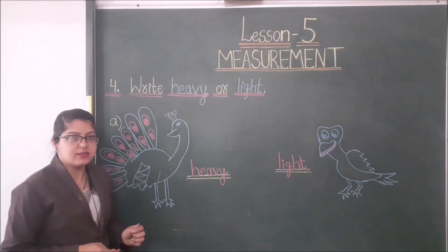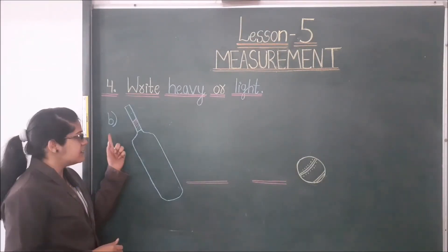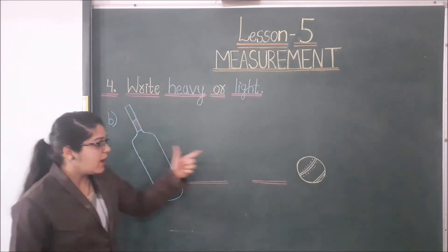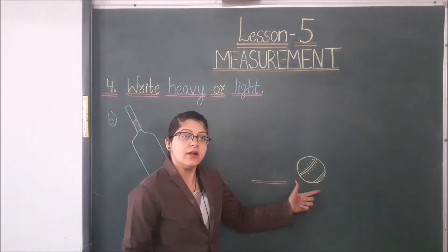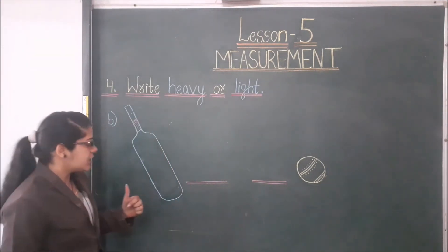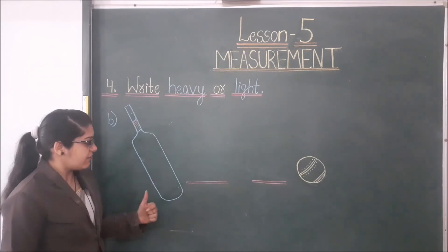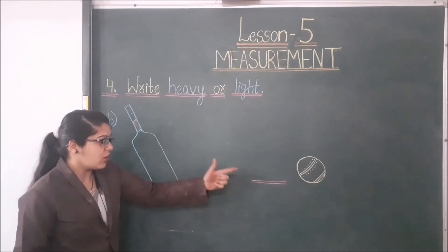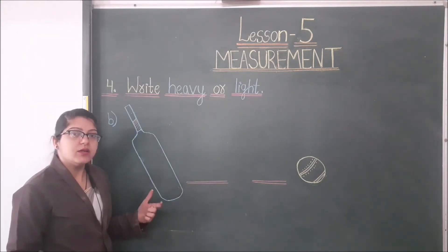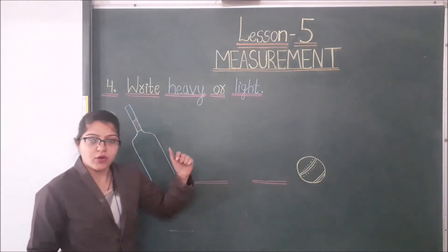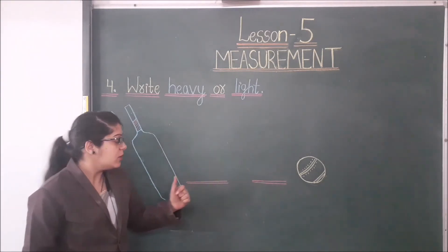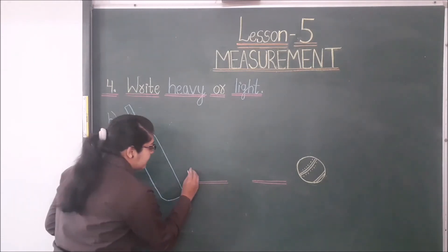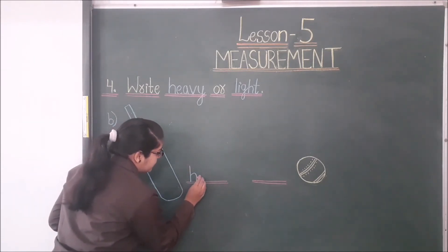Now let's see the next. This is a bag and this is a cricket ball. Which one is heavy — a bat or a ball? Bat is heavier than a ball. So, bat is heavy — here we write 'heavy'.